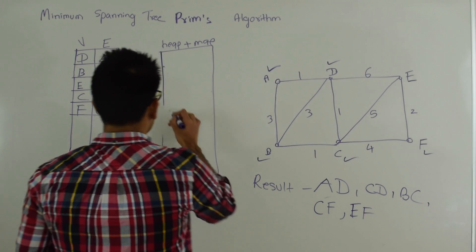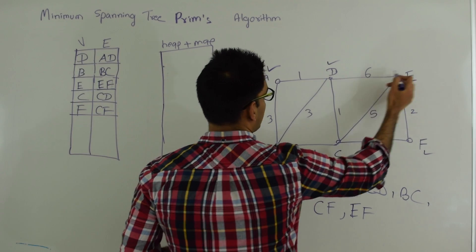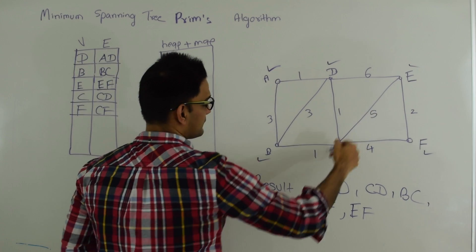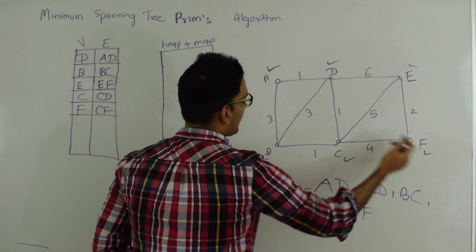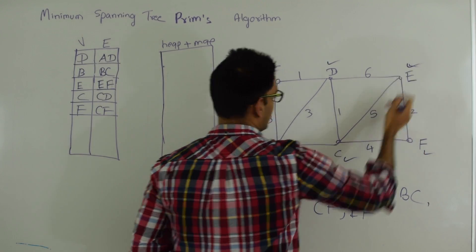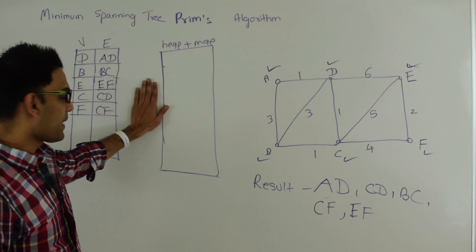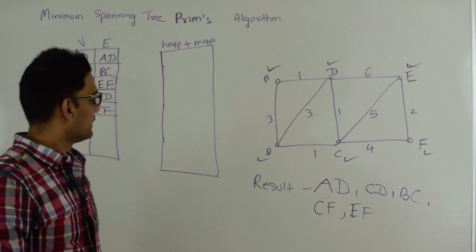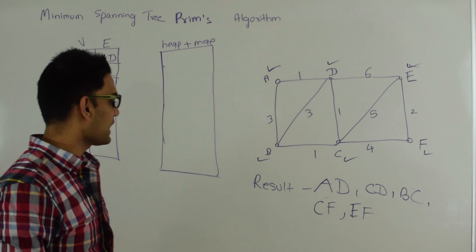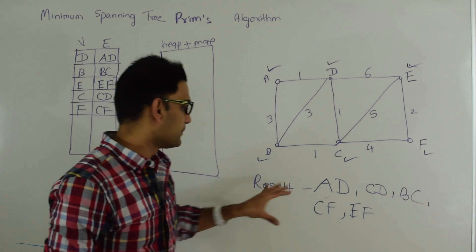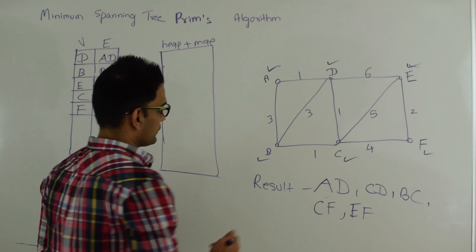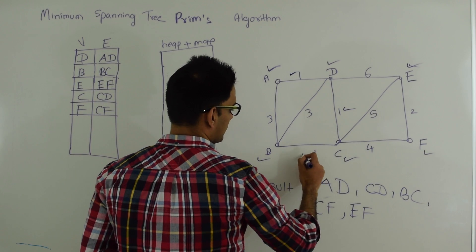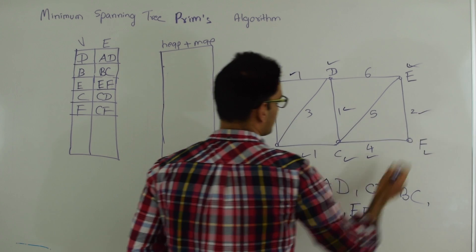We are done exploring F's neighbors. We extract the last element — E,2 comes out. We check who introduced this value: that's edge E-F, which also goes into the final result. We remove E and look at its neighbors: D doesn't exist, C doesn't exist, F doesn't exist. We are done exploring E. The heap-plus-map is now empty, meaning all vertices have been covered and we have our minimum spanning tree edges: weights 1, 1, 1, 4, and 2.